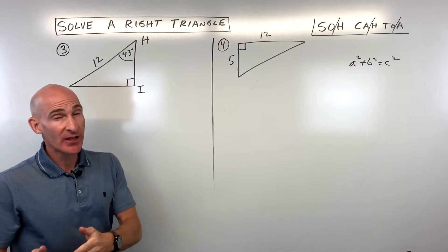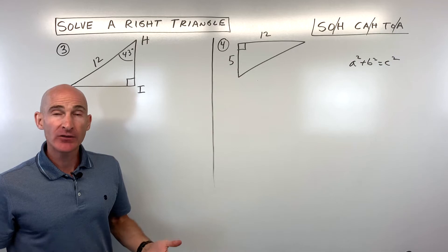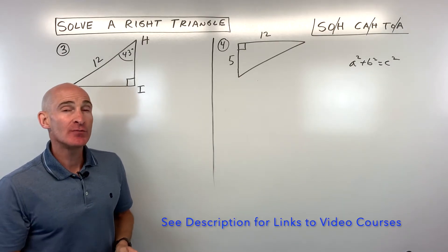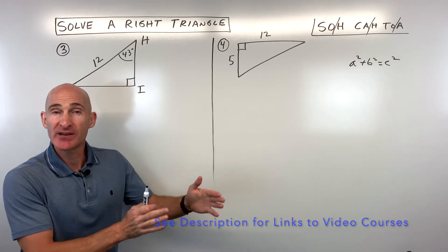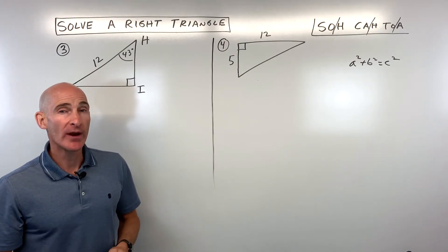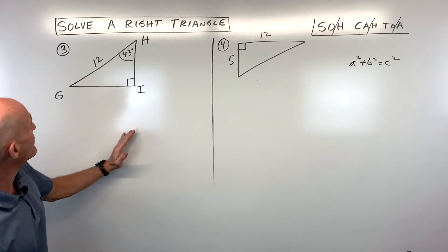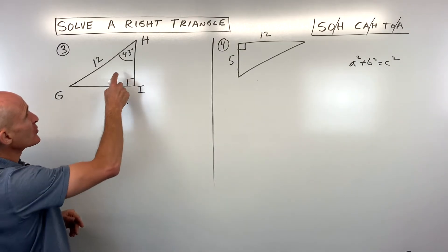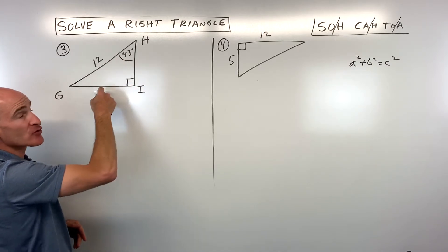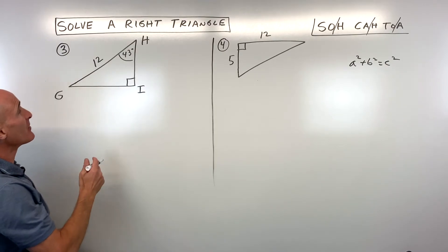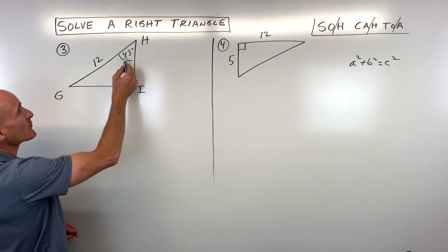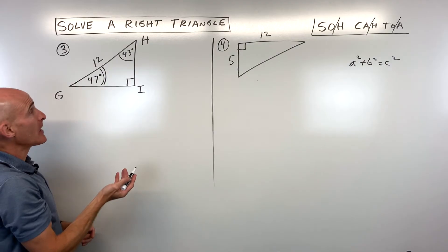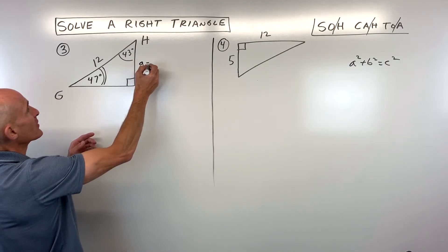Before we go through these last two examples — which I'd like you to try on your own first — if you like this style of explanation and want to learn more about algebra 1, algebra 2, or college algebra, check out the links in the description. Now, for Example 3, we're given two angles and a side. The two acute angles add up to 90, so 90 minus 43 gives us 47 degrees for the third angle.